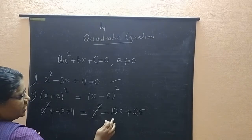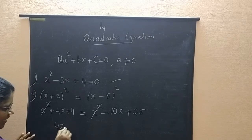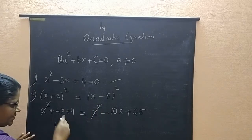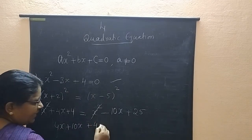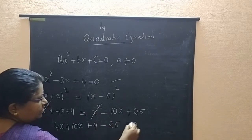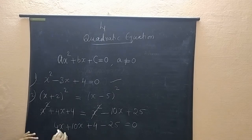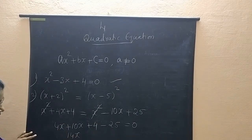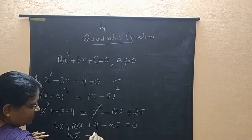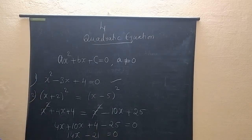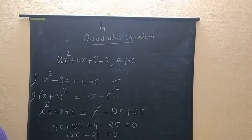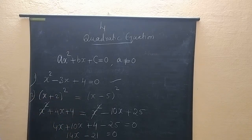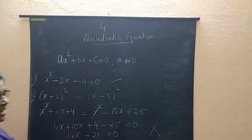After cancelling x², we get 4x + 4 = -10x + 25. Bringing all terms to the left side: 4x + 10x = 14x, and 4 - 25 = -21, giving 14x - 21 = 0. The degree of this simplified form is 1, so it is not a quadratic equation.